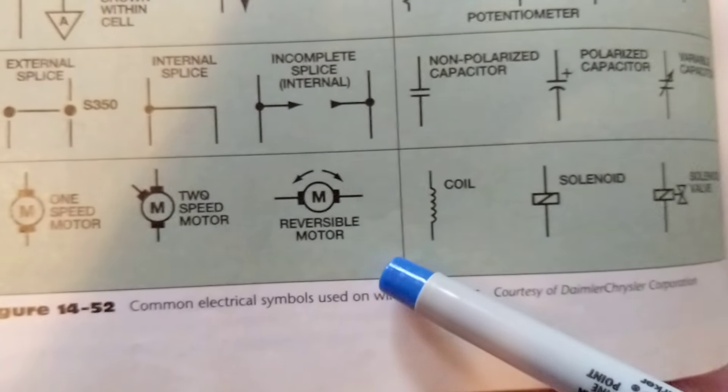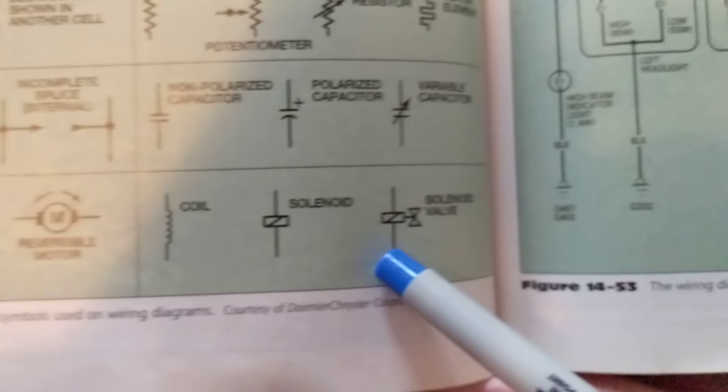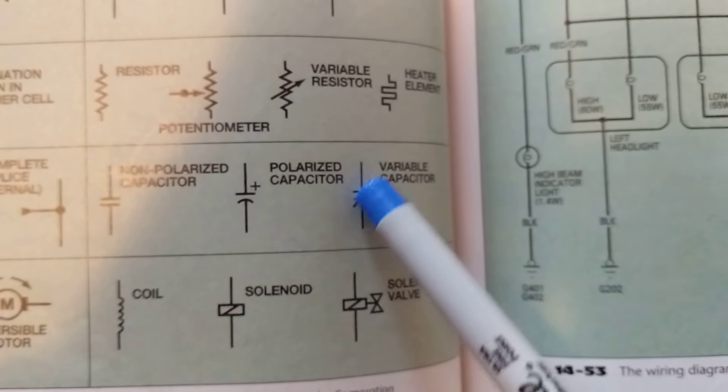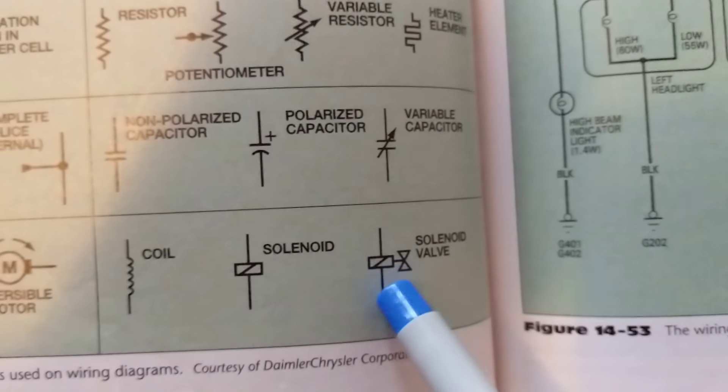Motors, wherever you see M it's a motor, that means something is turning. Capacitors, whenever you see this that means it's variable, you can change the value of it.